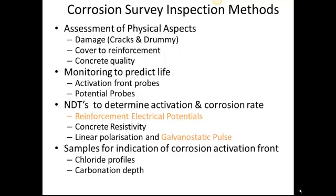Finally, it's possible to look for where corrosion has begun using electrical methods. Reinforcement electrical potential — that's half-cell potential testing — is what the KANAN and the ChoroMap are for. Concrete resistivity is primarily a measure of concrete quality and permeability, and it correlates very well to rapid chloride penetration tests. Linear polarization and galvanostatic pulse are measures of the corrosion rate. Nothing's going to measure exactly how corroded a bar is, but you can determine how likely it is that it's corroding in certain areas and the rate at which it's corroding — the rate at which you're going to lose metal.